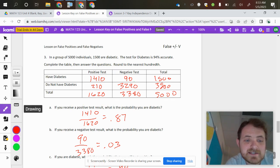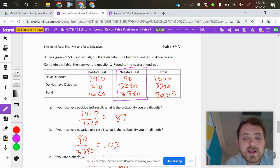If you receive a negative test, so the column I'm looking at is the negative column. What's the probability that you are diabetic? So only 90 people should be diabetic if they test negative. So 90 divided by that total would be 0.03.